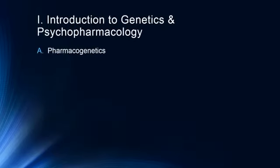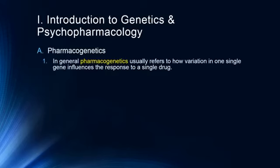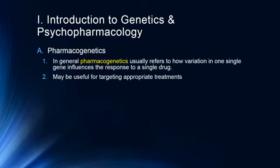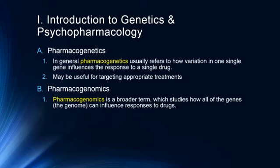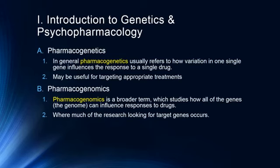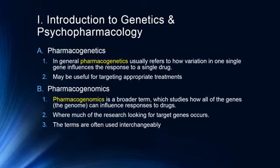Let's talk about genetics and psychopharmacology. Pharmacogenetics generally refers to how variations in one single gene influence the response to a single drug — this may be useful for targeting appropriate treatments. Pharmacogenomics is a broader term studying how all genes, the entire genome, can influence drug responses, and that's where much of the research looking for target genes occurs. The terms are often used interchangeably, but pharmacogenetics is probably most appropriate here since we're usually talking about something very specific altering in a person's genetic structure, not the entire genome.